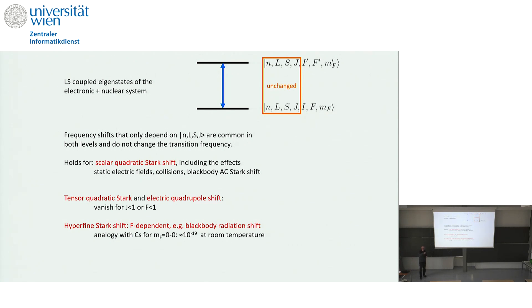But of course, now not relative to the 9 gigahertz cesium frequency, but relative to the 2, what is it, petahertz to 10 to the 15 hertz of the nuclear clock. And that's why we very roughly estimated it could be maybe 10 to the minus 19 at room temperature.